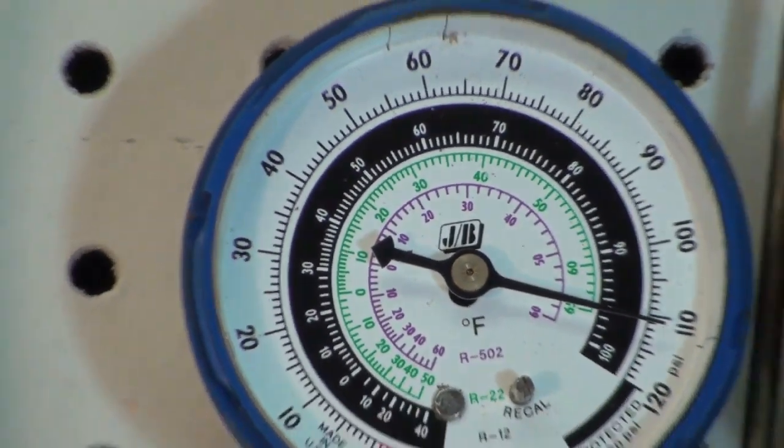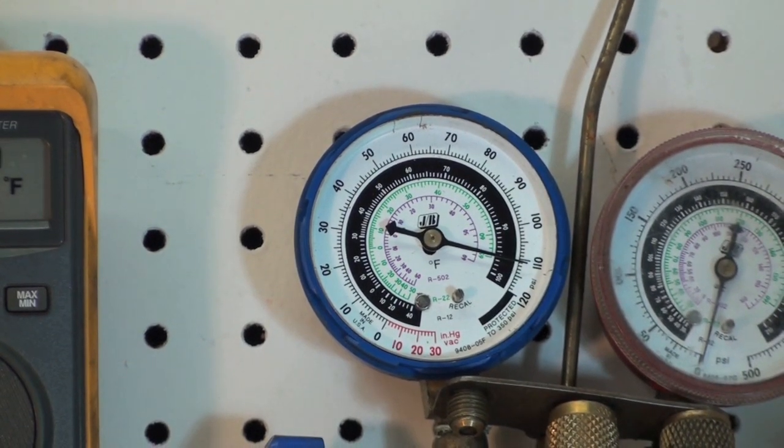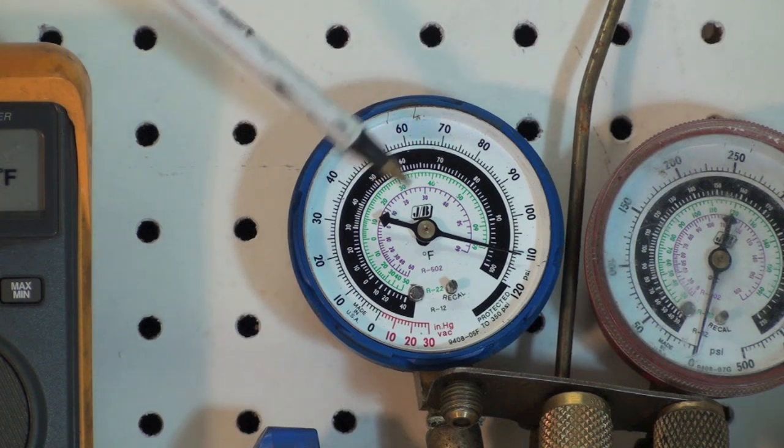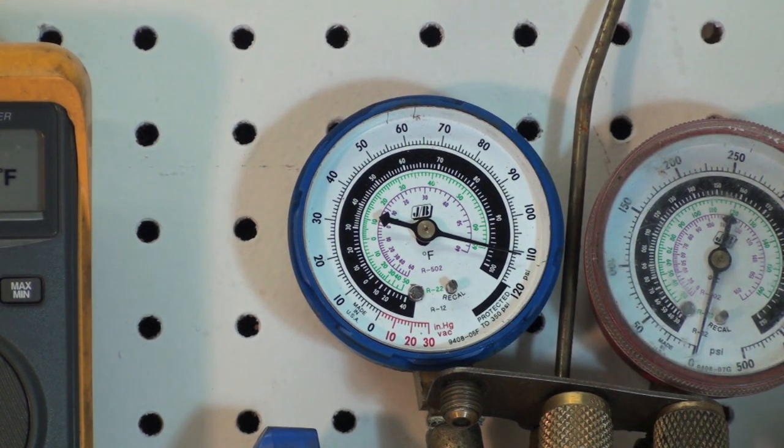The gauges that we use, these manifold gauge sets, are set up with several different refrigerants on the scale like R12, 502, and 22 on this one. This is an old scale. We're still using 22, but 502 and 12 are pretty much gone. But you can see that temperature equals pressure. Now there are charts for this, pressure-temperature charts, and on the Great Cooling Man website I have those links to them and there's an app and a bunch of stuff like that. You can get them all over the internet and they will show you what the different pressures will be for the different refrigerants.